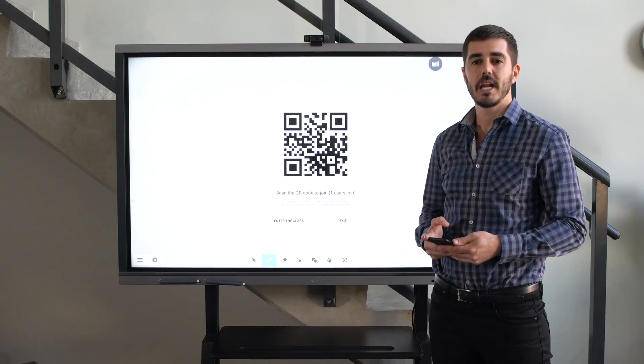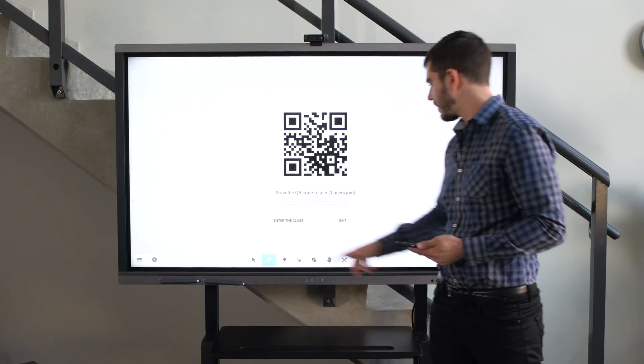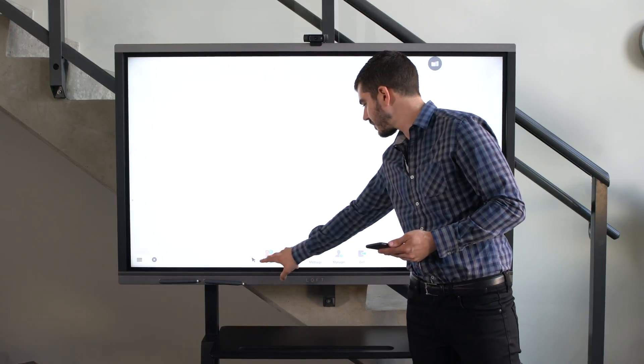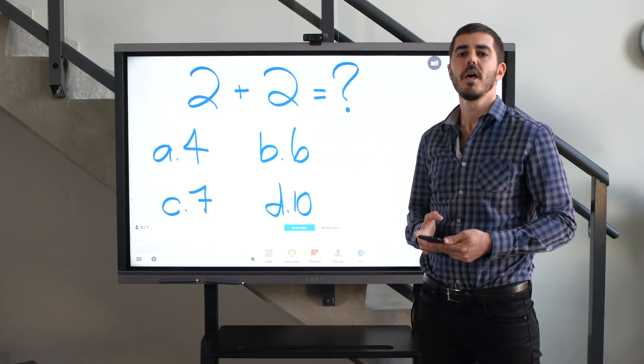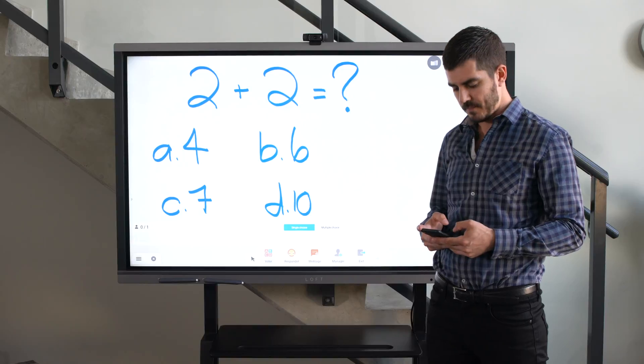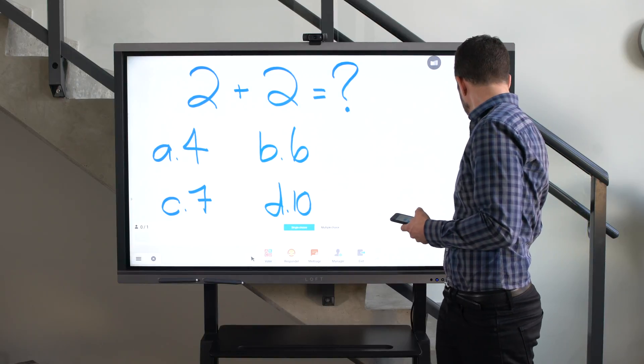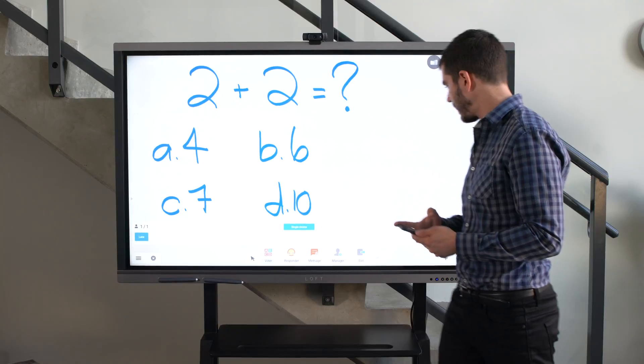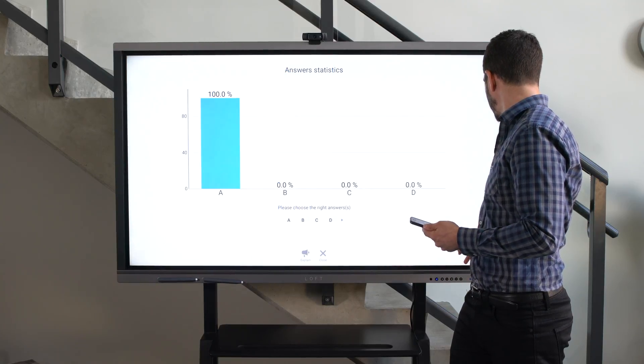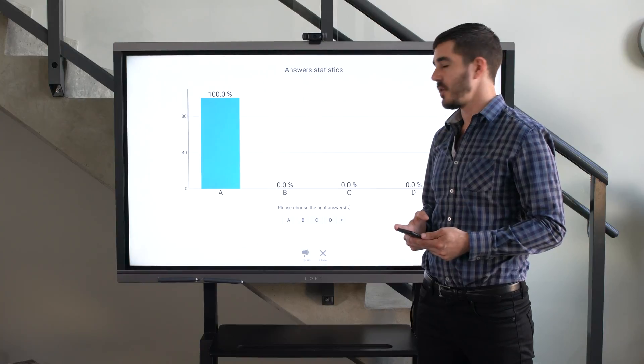A great tool that can be used to get everyone involved is the Vote tool. If the presenter poses a question on the board, the participants can answer on their phone. Then, once they've finished answering, they'll be displayed in real time on the screen.